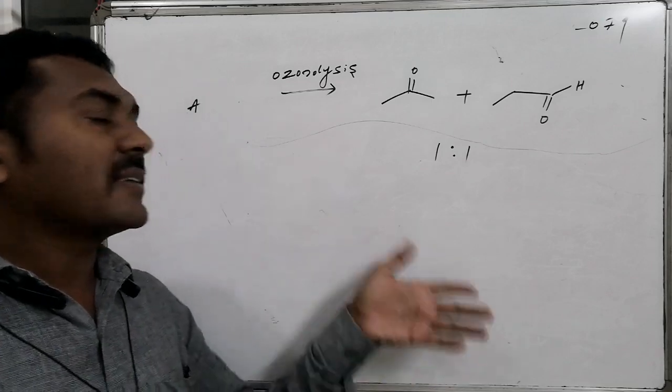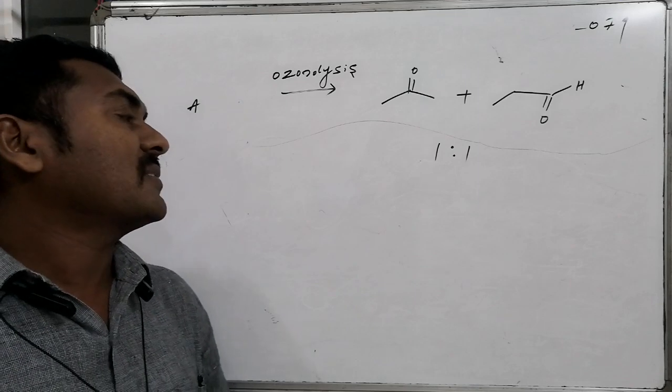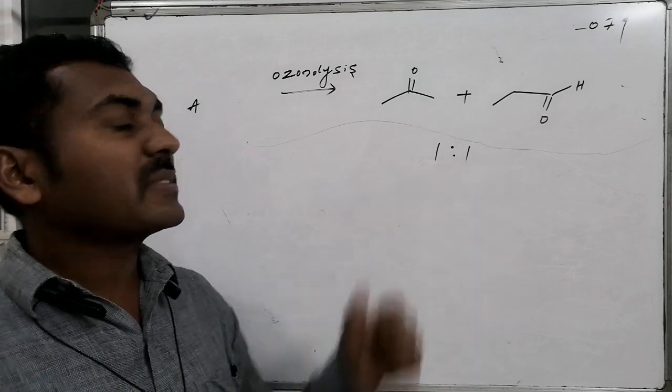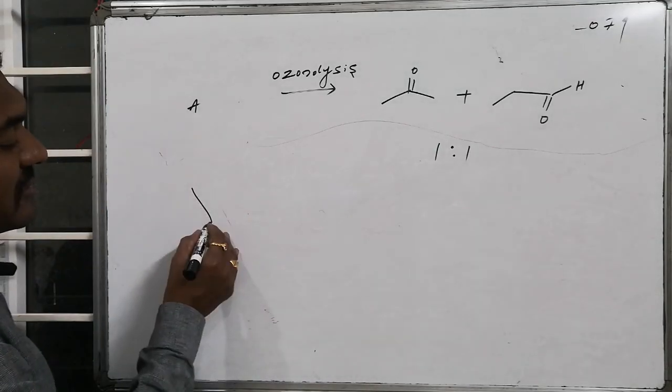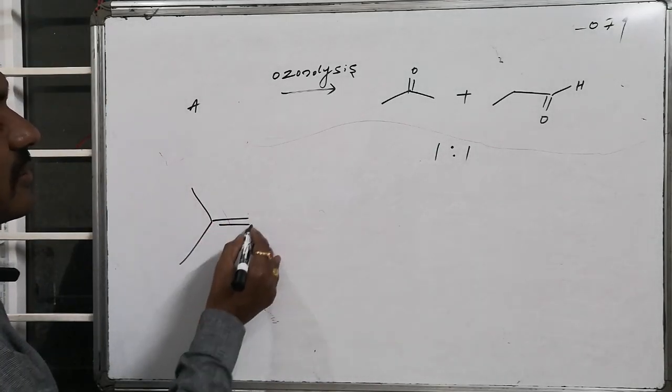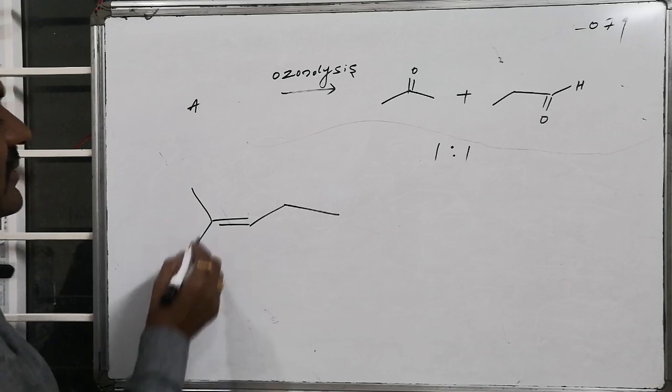The alkene that participated in reductive ozonolysis produces these two products in a 1:1 ratio. As we know, ozonolysis is a process that occurs at the double bond, so if I write this...